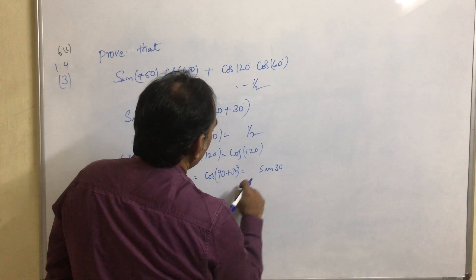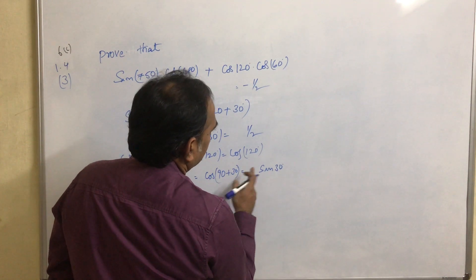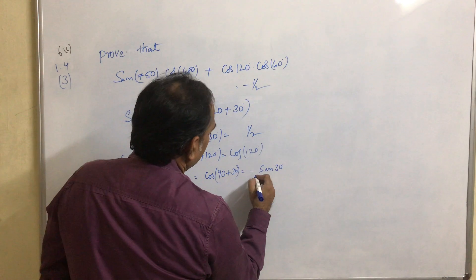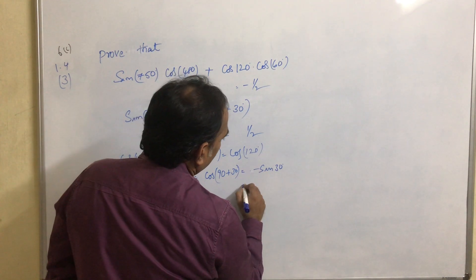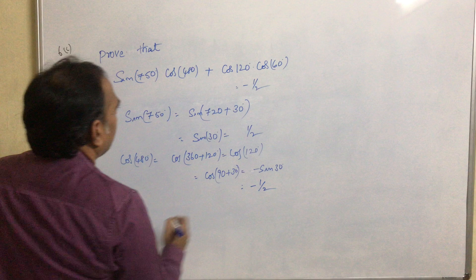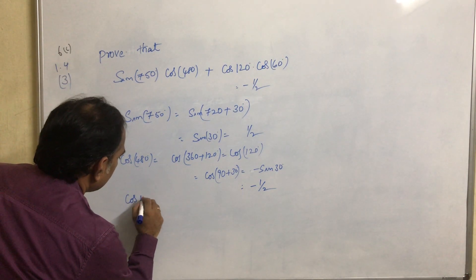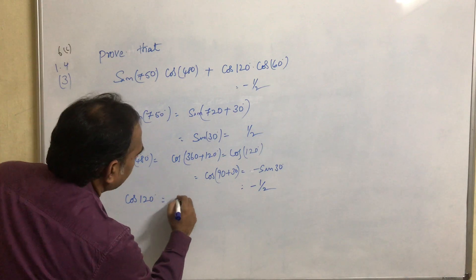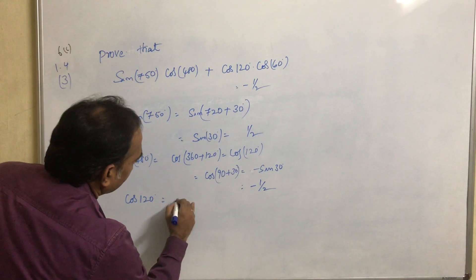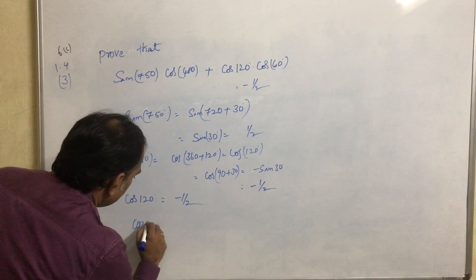cos120 can be written as cos(90+30). This is in the second quadrant, where the cos value is negative. So cos(90+30) equals minus sin30, which equals minus 1 by 2.